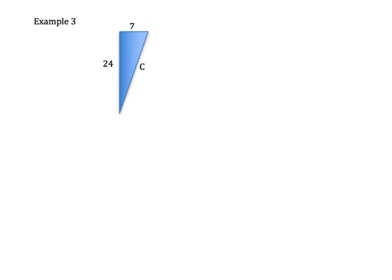Are you ready to try one by yourself? If so, pause the video and try example 3, and then come back and check how you did. On this example, we are given a triangle with side lengths 7, 24, and C. Our legs are 7 and 24, so I do 7 squared plus 24 squared, and that's going to give me my C squared.